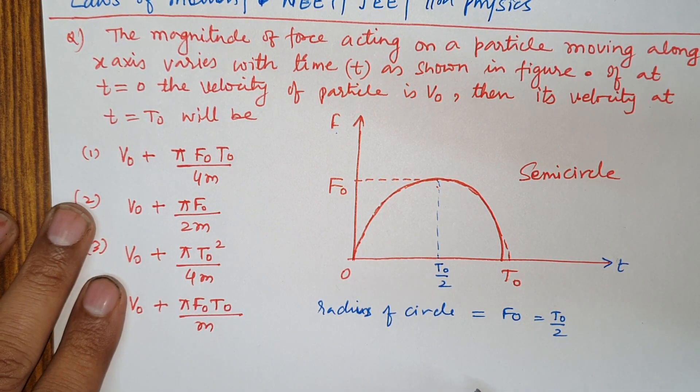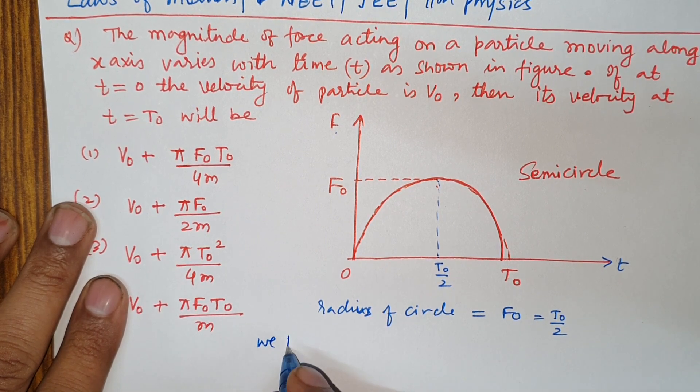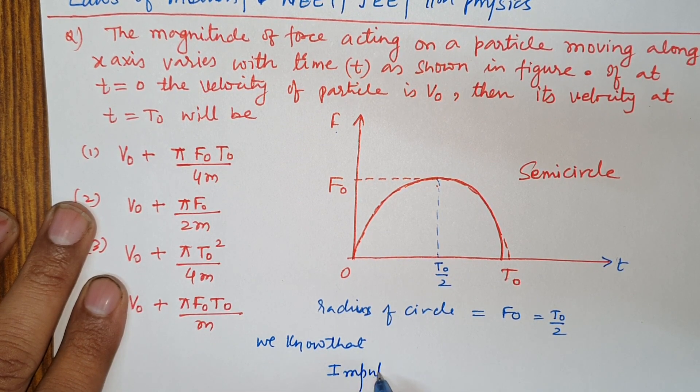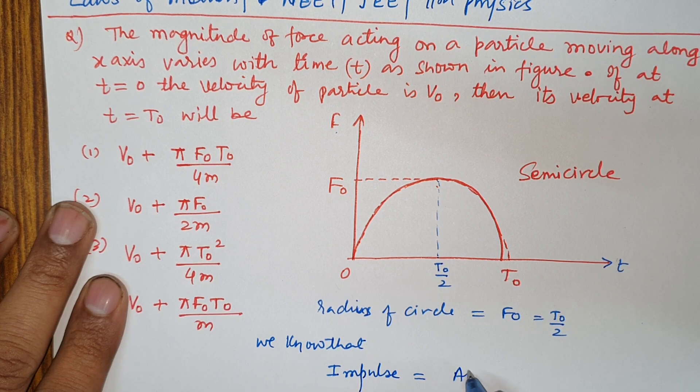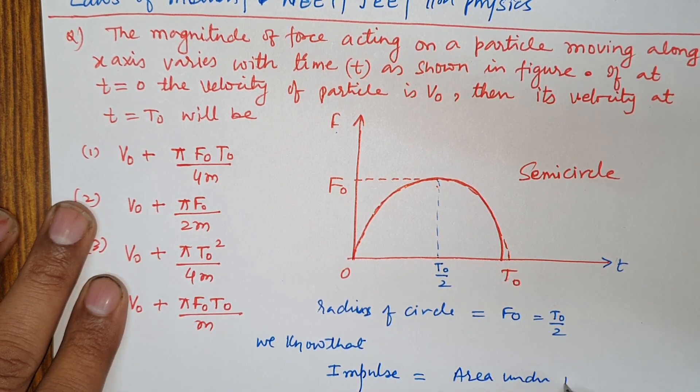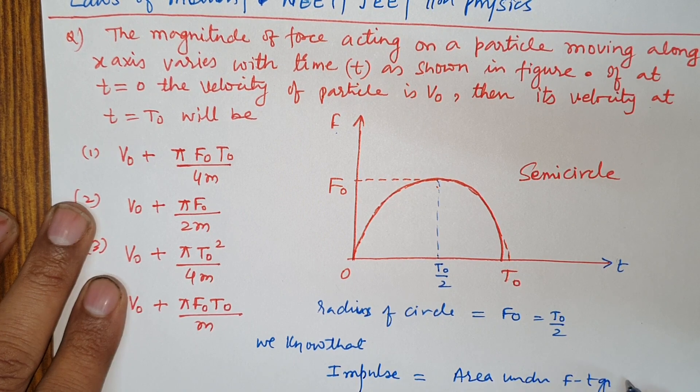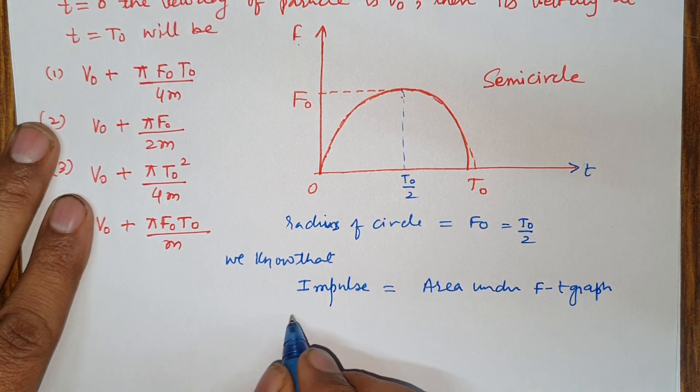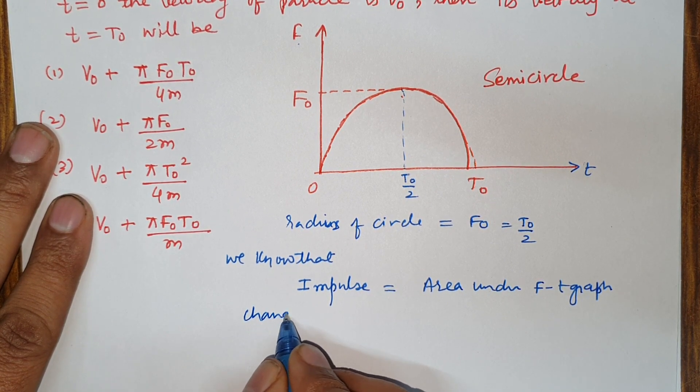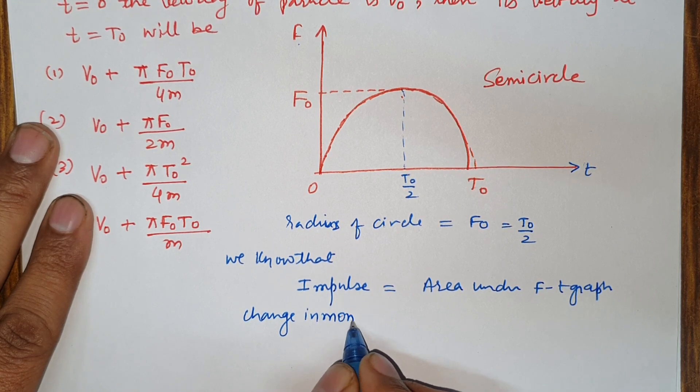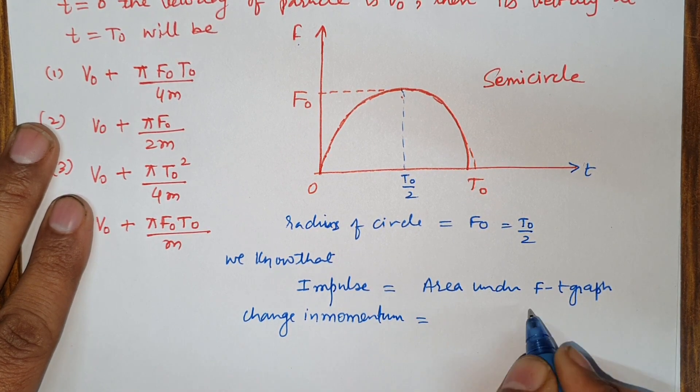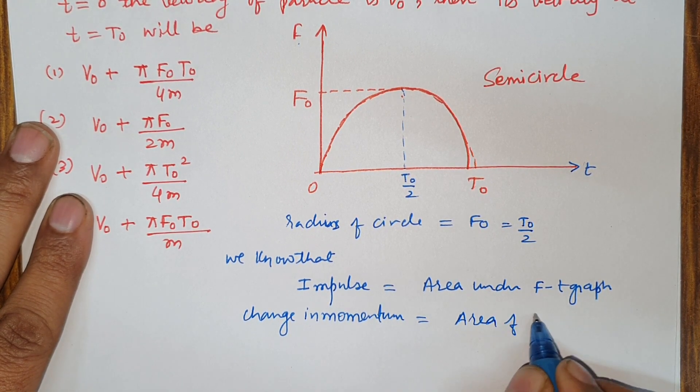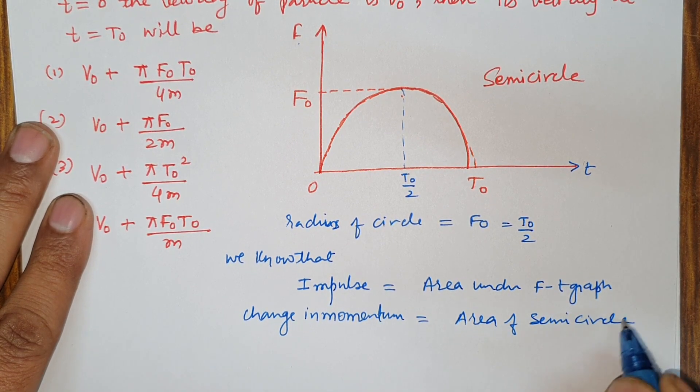Graph of area, we know that impulse, area under F-t graph, area under F-t graph. Impulse is equal to change in momentum. Change in momentum, momentum is equal to area under F graph, area of circle, area of semicircle, semicircle.